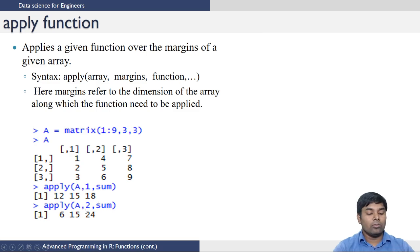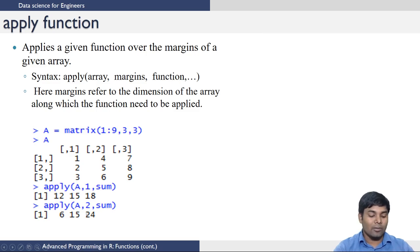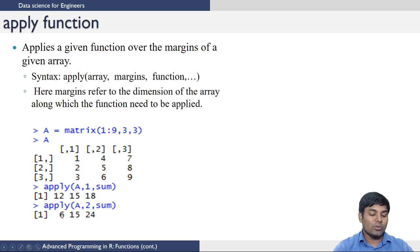You can do the same for columns by specifying the margin as 2, which says apply the sum function on A across margin 2, which is the columns. This command prints the sums of the elements in each column, for example 3 plus 2 plus 1 equals 6, and so on.